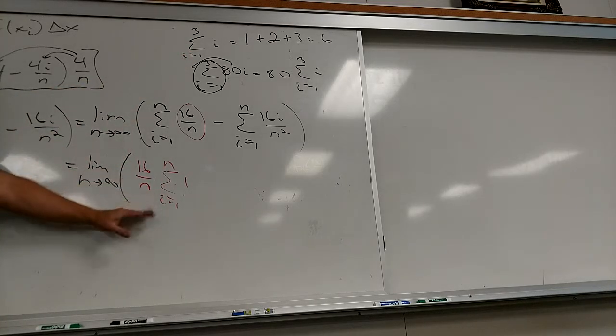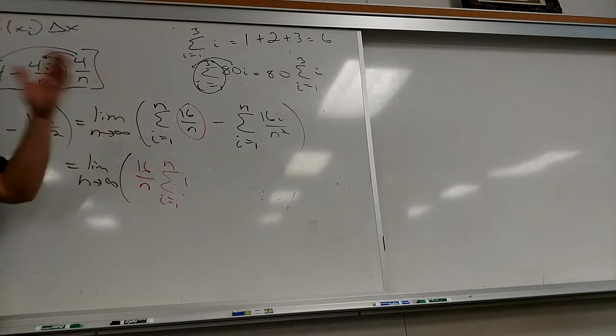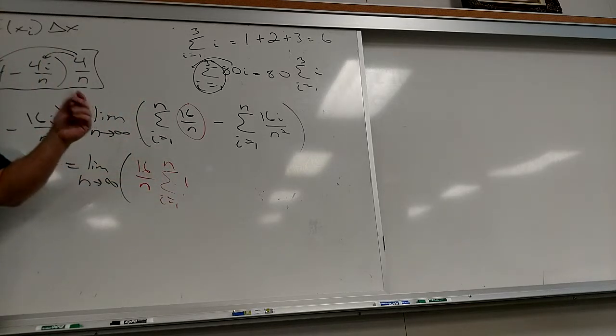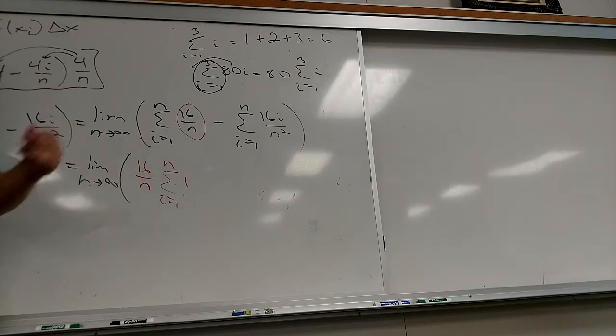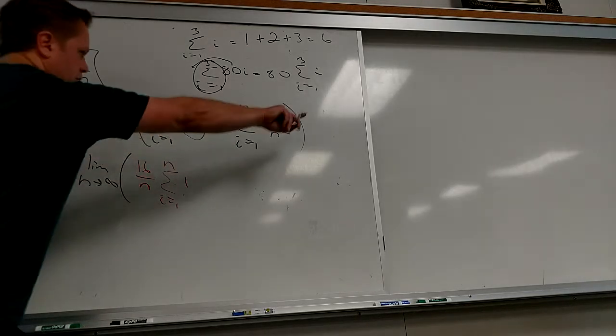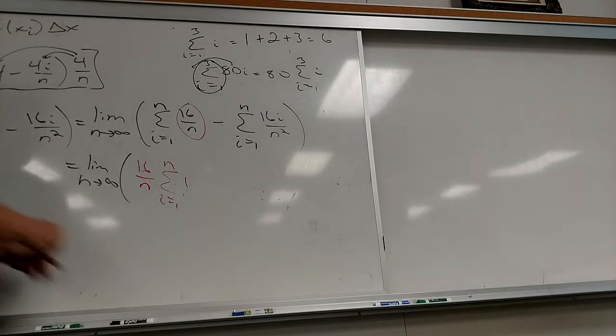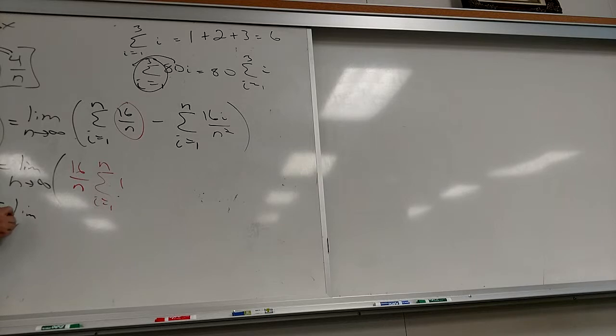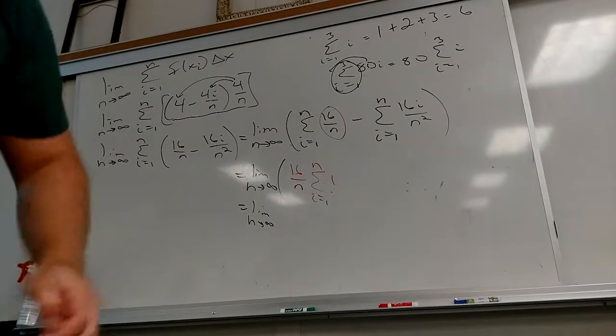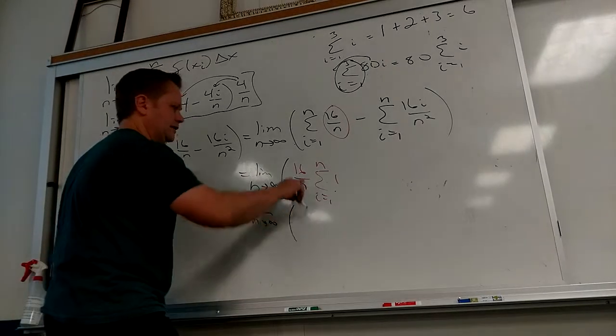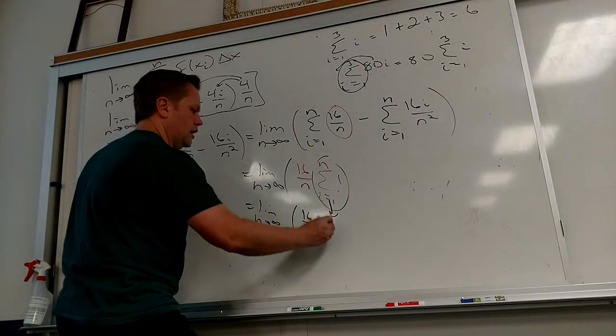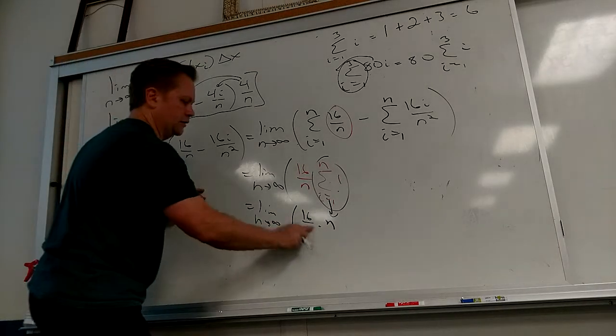Add one up n times. Does everybody see how the symbol means that? Add one up n times, I get n. I love it. So in the next step, I know I've got more to do this way, but let's just take care of this really easy little piece here. So I get 16 over n times n. That looks nice. Those n's cancel. That's always nice.